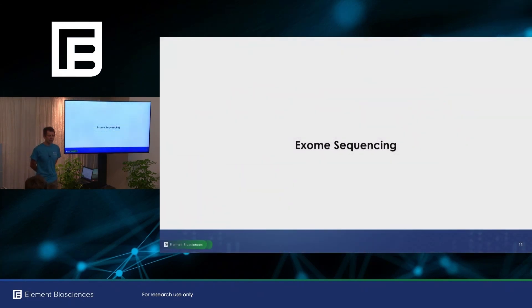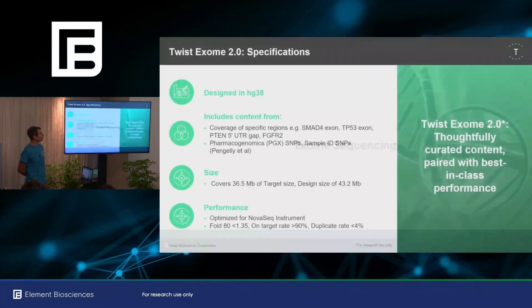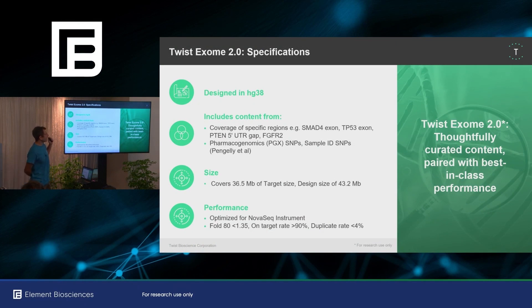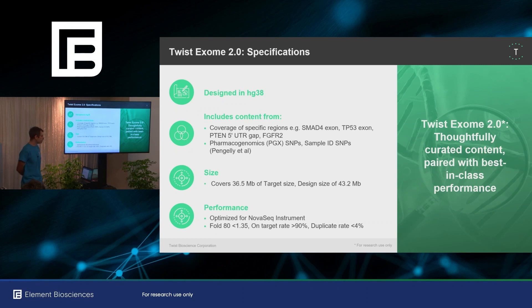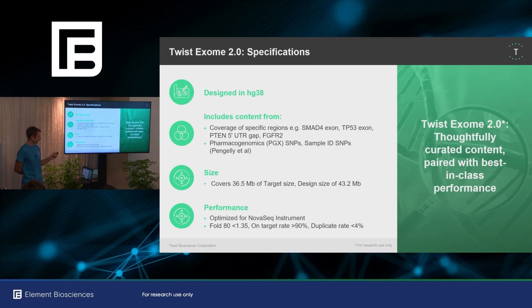Moving from technology to applications, the first application is exome sequencing with our partners at Twist. Twist kindly provided this slide — they have an excellent exome product, about 40 megabases in size covering all important regions. It was optimized for the NovaSeq instrument, but we wanted to see how it would perform on Aviti, paying special attention to the fold 80 penalty, on-target rate, and duplicate rate.